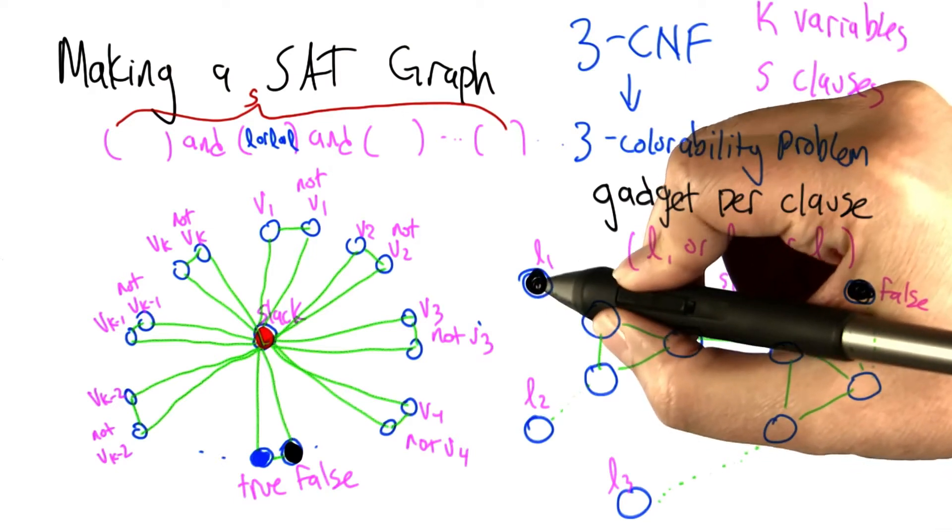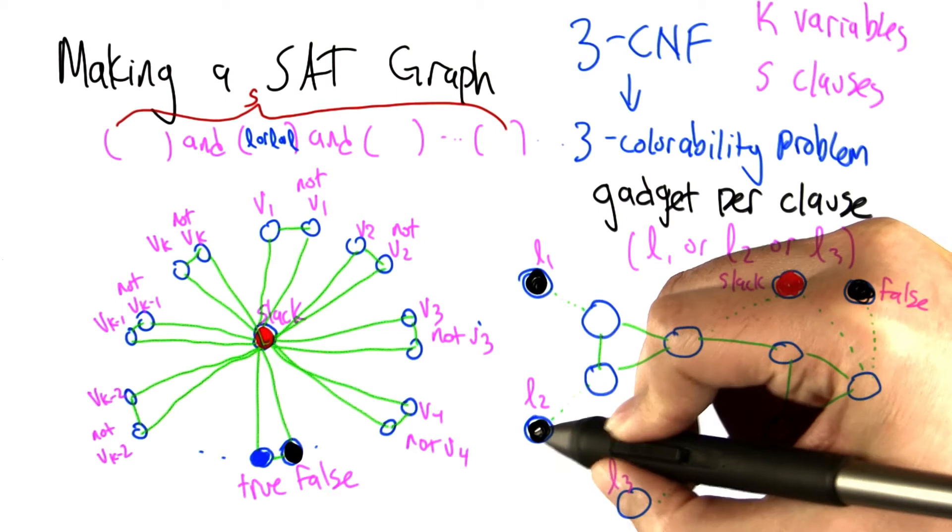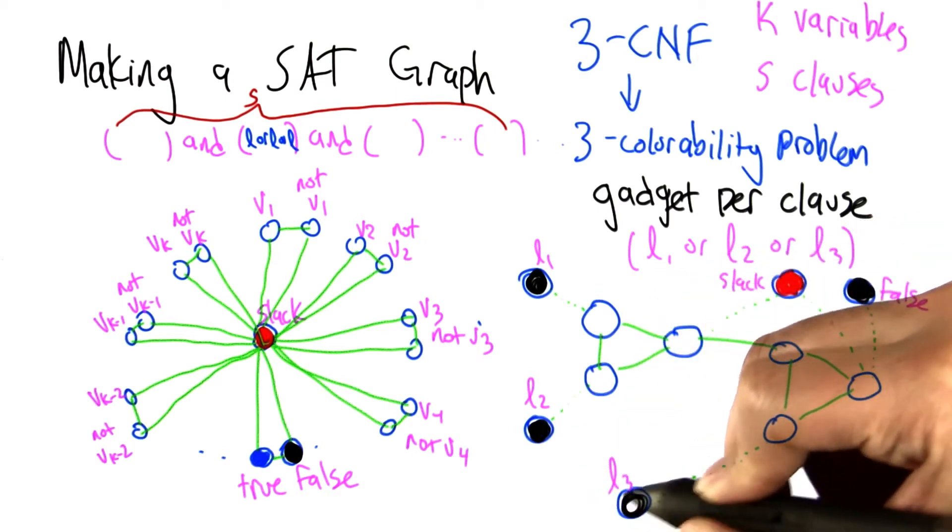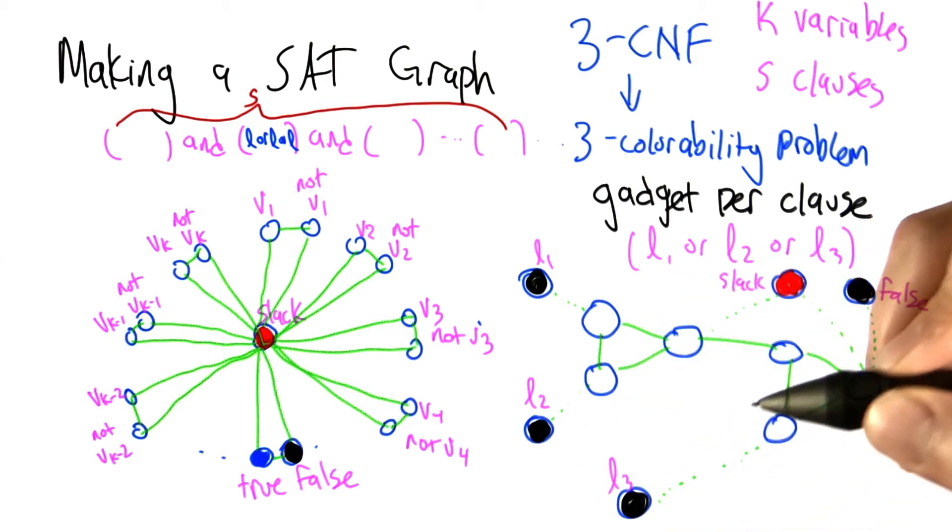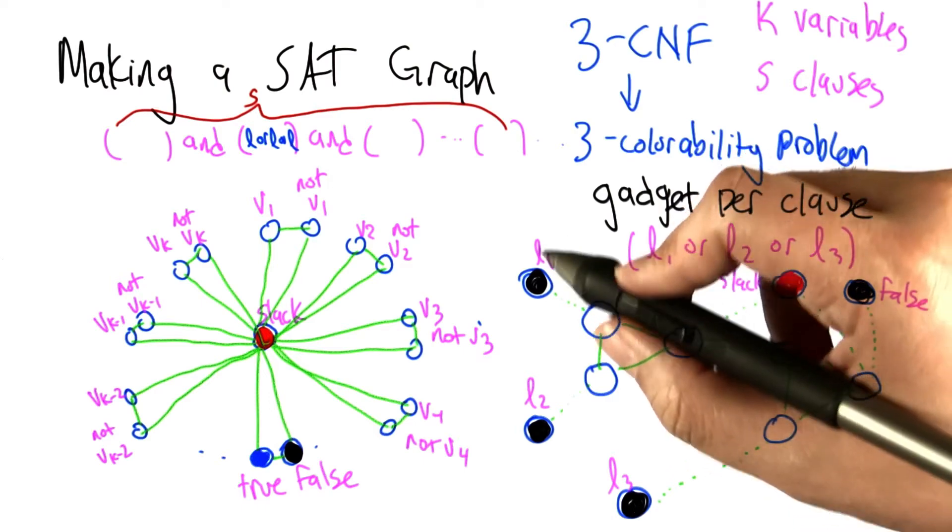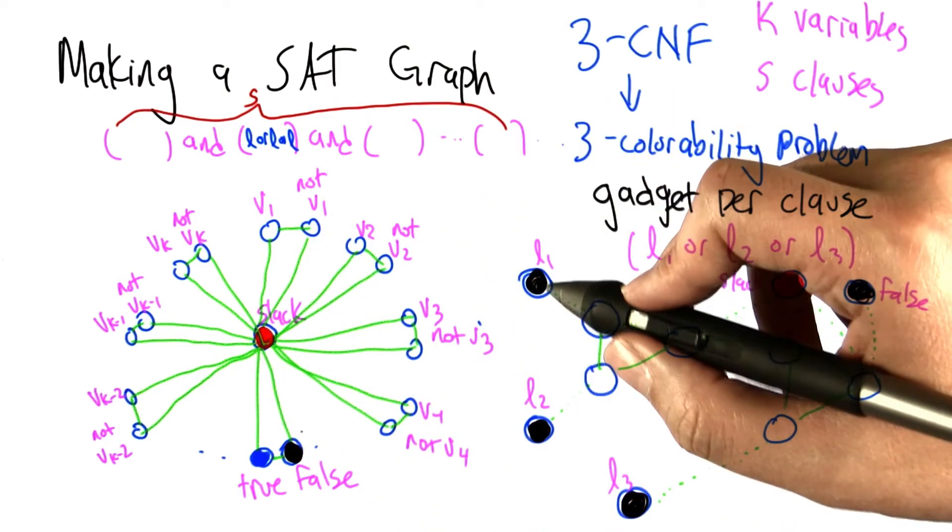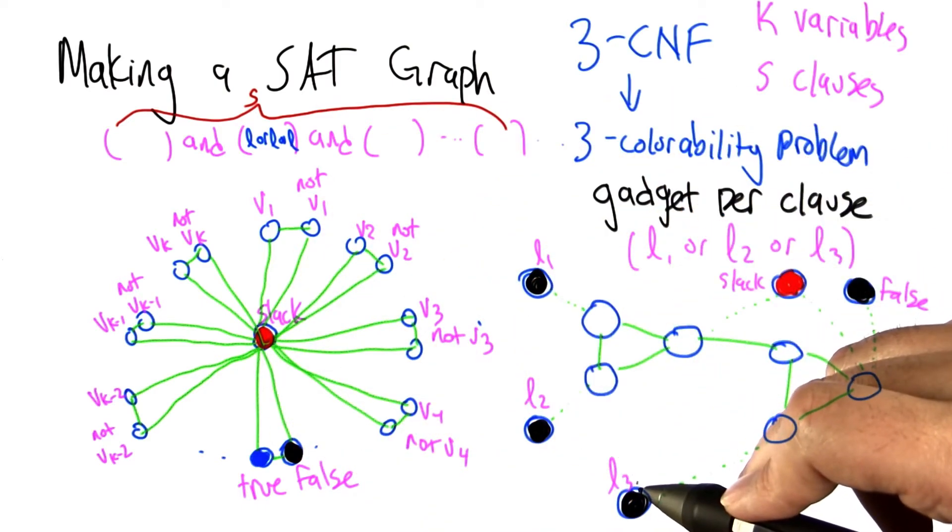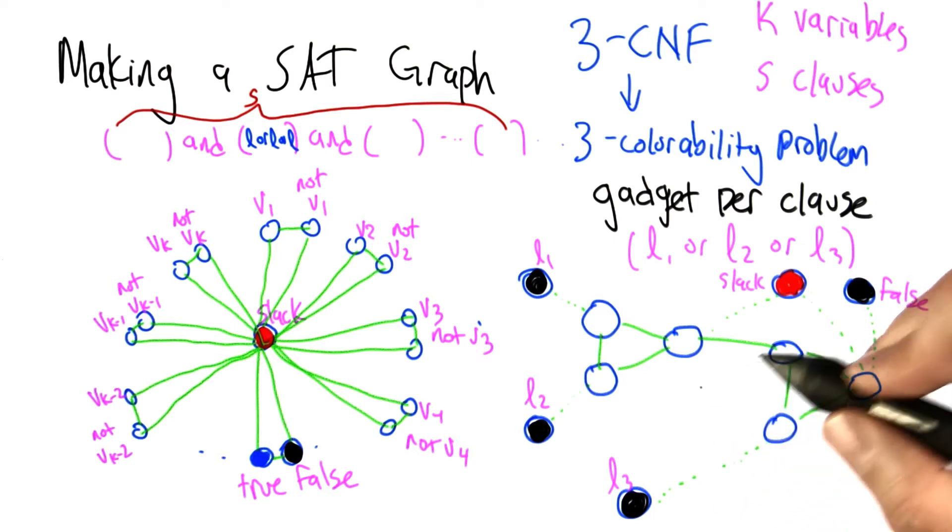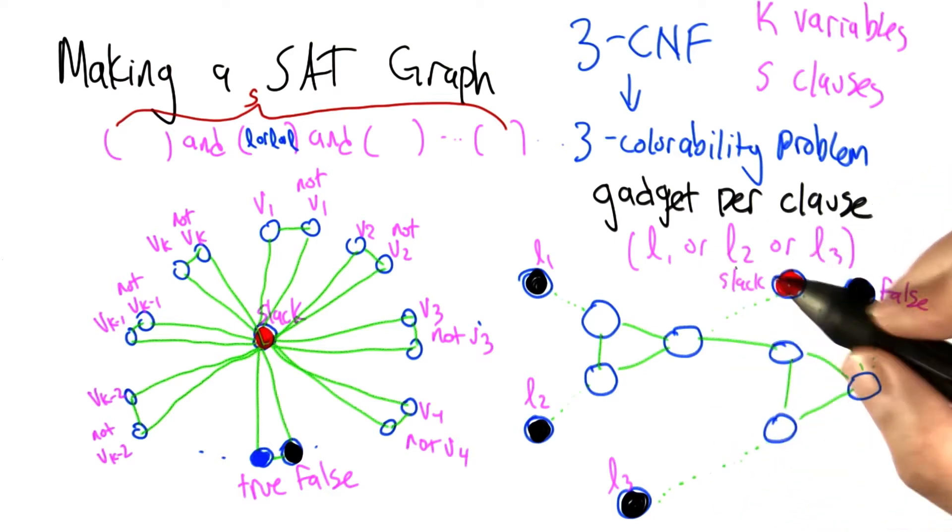So let's start off with the case where all 3 of the literals are false. That's an important case because if the assignment is such that the literals are all false, then it's not satisfied, this clause is not satisfied, so the whole formula is not satisfied.